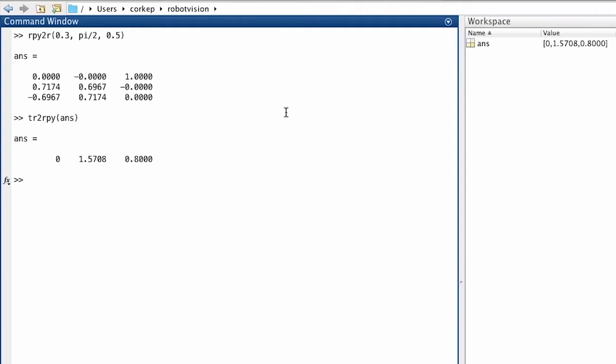Now, if you're sharp, you'll have noticed that 0.8 is the sum of 0.3 and 0.5. So, one of our angles has gone to 0. The yaw angle has gone to the sum of the original roll and yaw angles. What's going on here? Well, this is a condition known as singularity, and it occurs in any three angle sequence representation of an orientation.